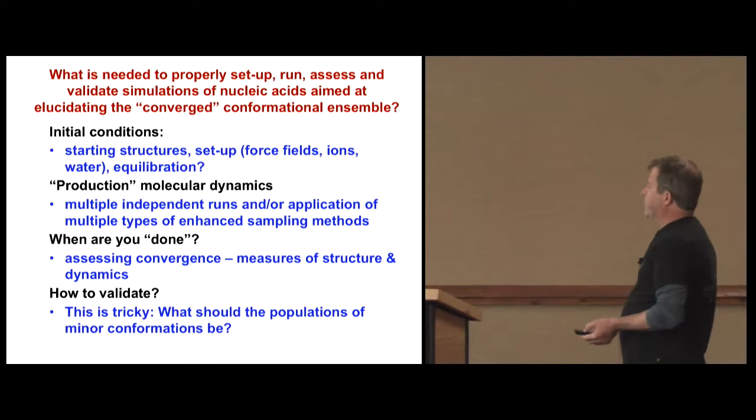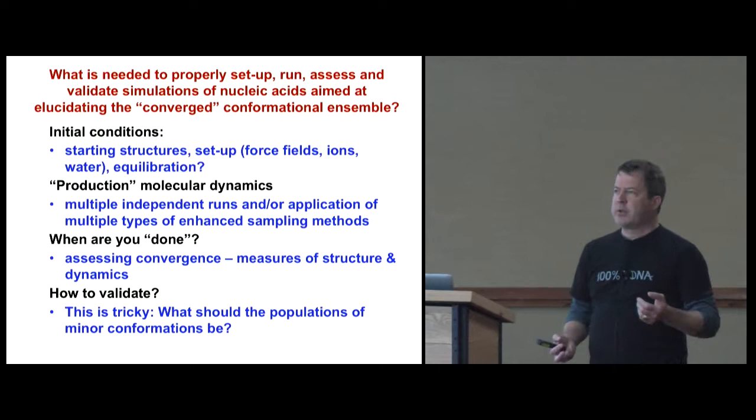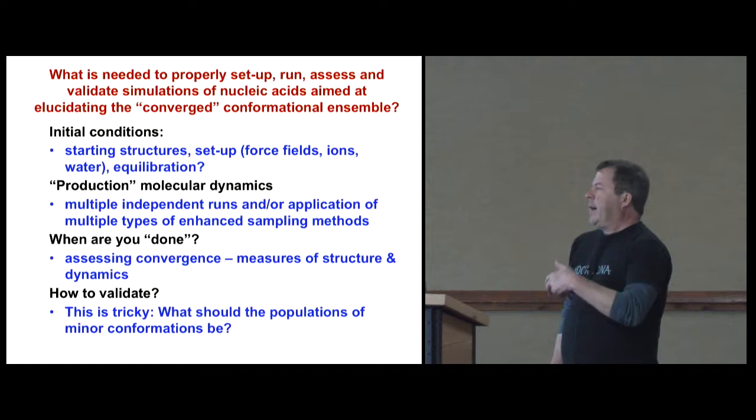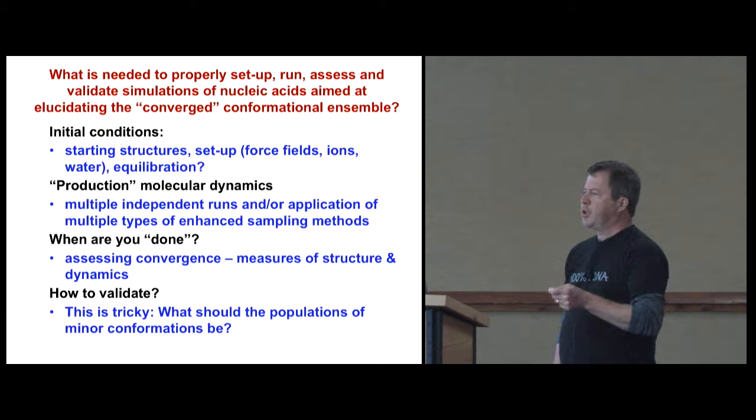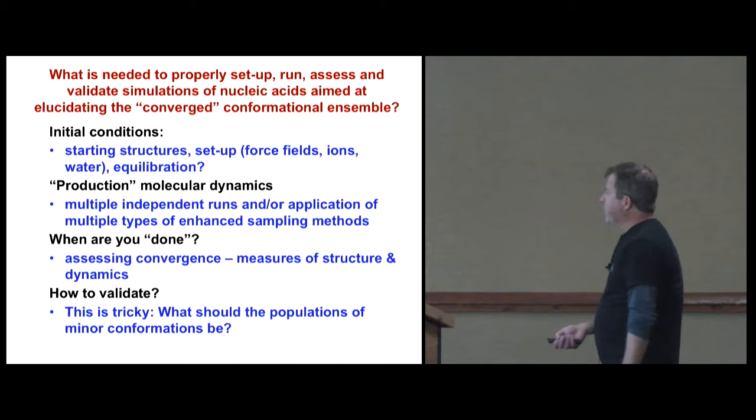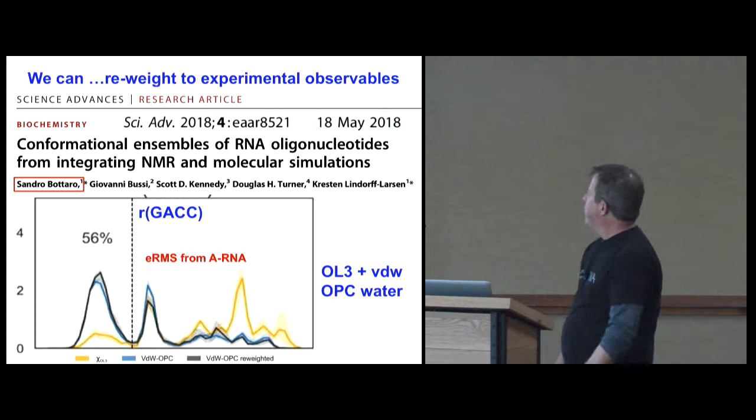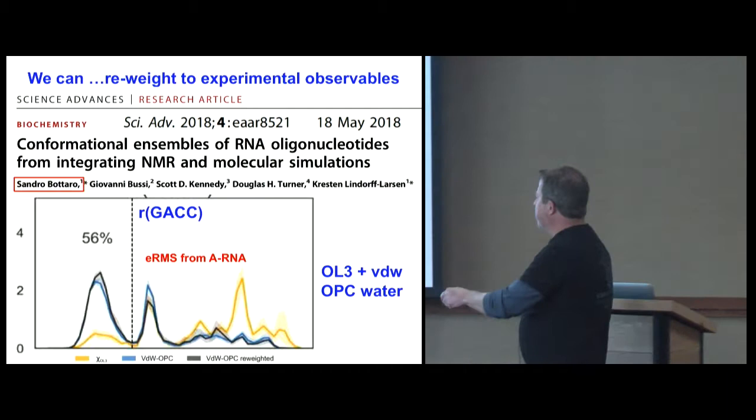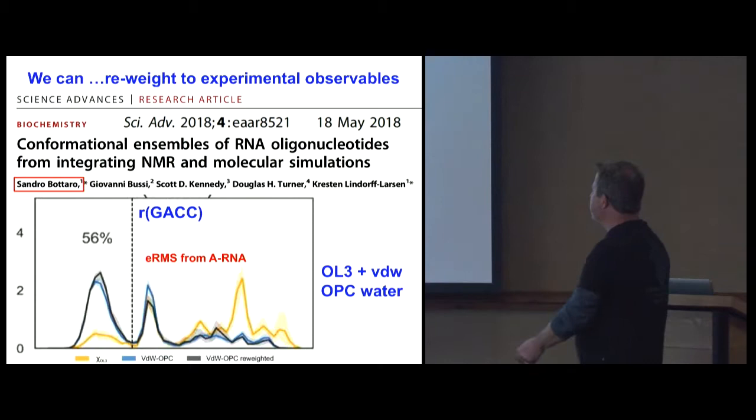So how to validate? This is tricky. And one of the problems we have is there is a conformational ensemble of molecules, particularly in the RNA case. It adopts multiple conformations. And one thing that's hard to understand from experiment is what the population of the minor conformers should be. Is it 1%, 2%, 5%? And it's a very tricky thing. We've been looking towards Maxent methods, along with Sandra Batista and Linda Floris and Giovanna Bussi, where they can re-weight to fit experimental observables. Unfortunately, it turns out that the difference from when we re-weight to what it originally was isn't really that much in terms of populations.